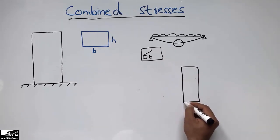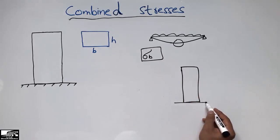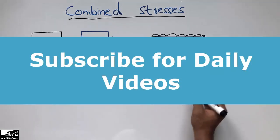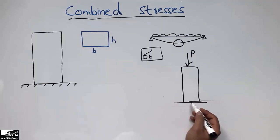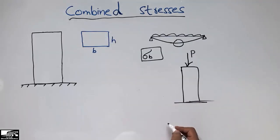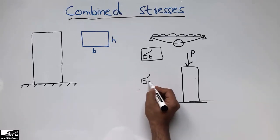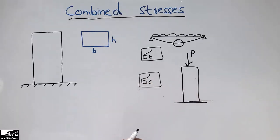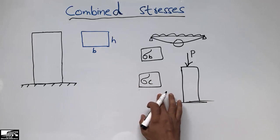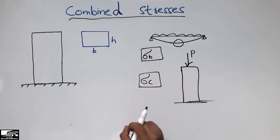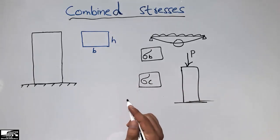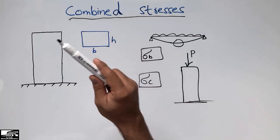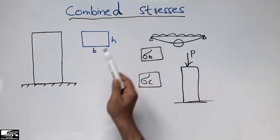Now consider another type of stress: a column with an axial load acting at its center. Due to this axial load, we only have compressive stresses in the column, represented by Sigma C. These are called single stresses in a member. Combined stresses occur when we have two different combinations of stresses.